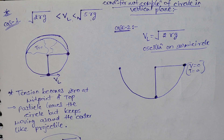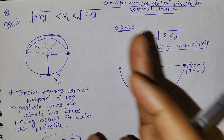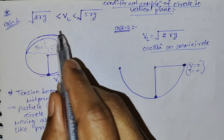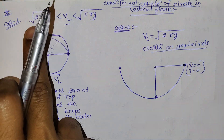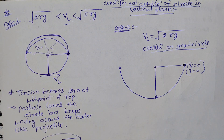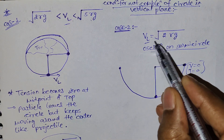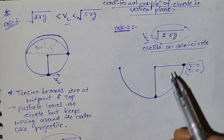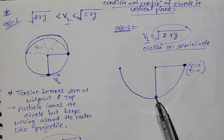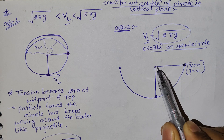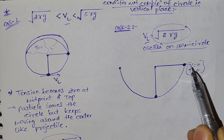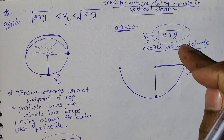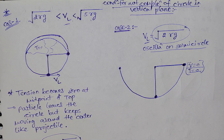Condition for not completing the circle in vertical circular motion: velocity should be less than root(5RG) but greater than root(2RG). If velocity equals root(2RG), the particle goes from the lowest point to horizontal, tension becomes zero there, and the particle oscillates in a semicircle.